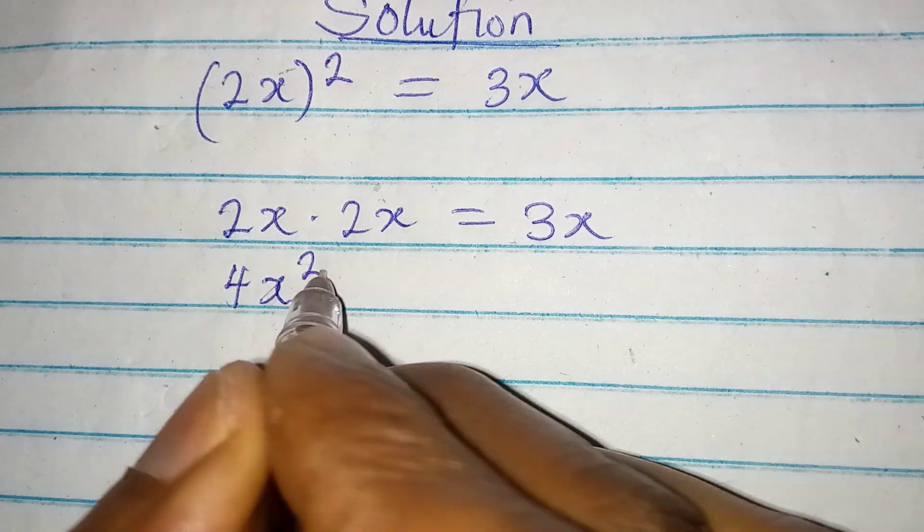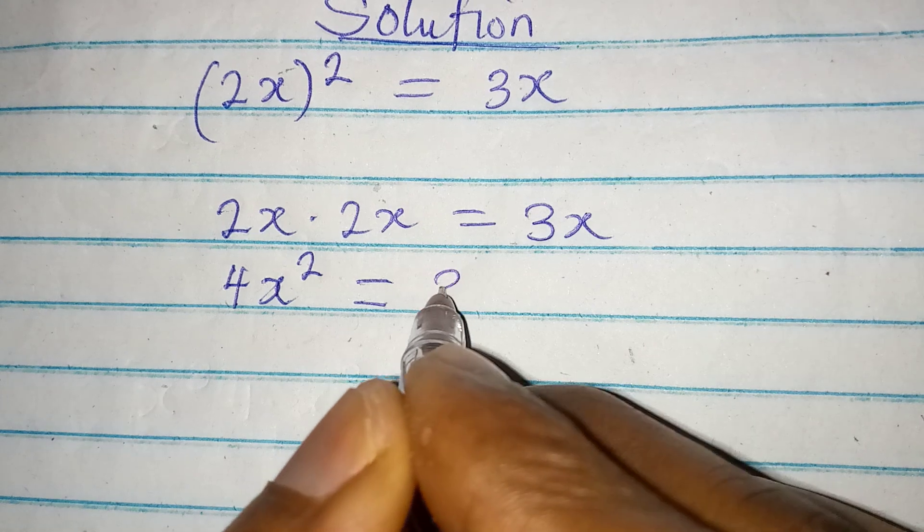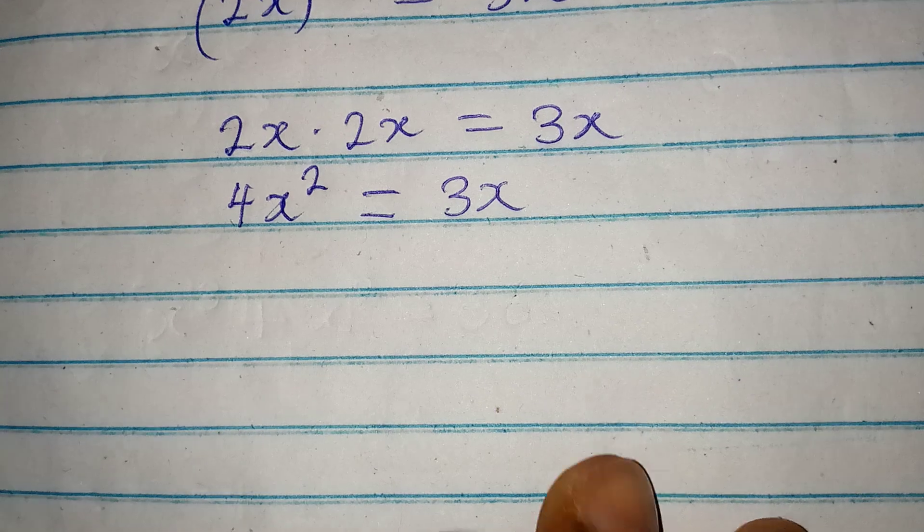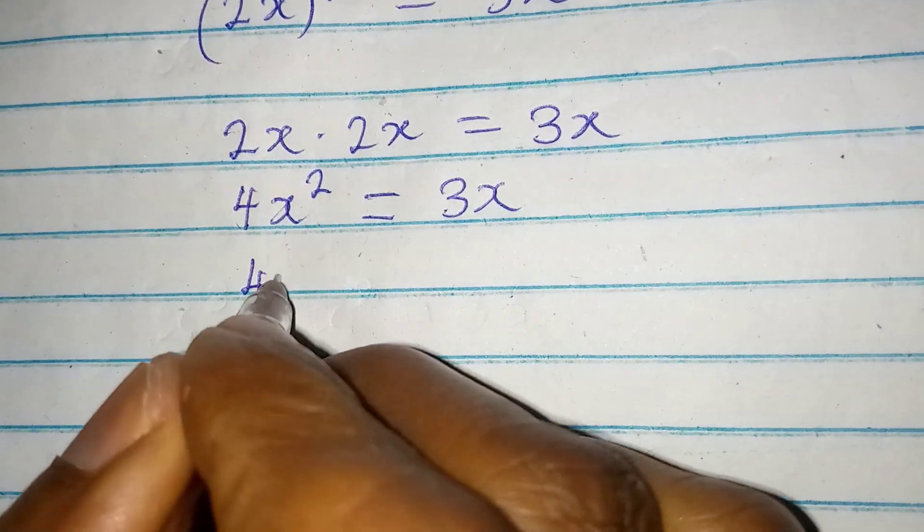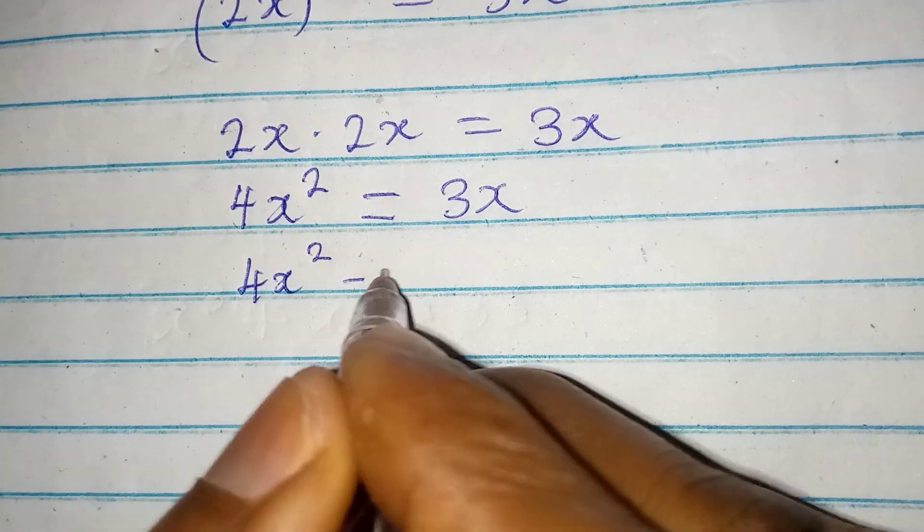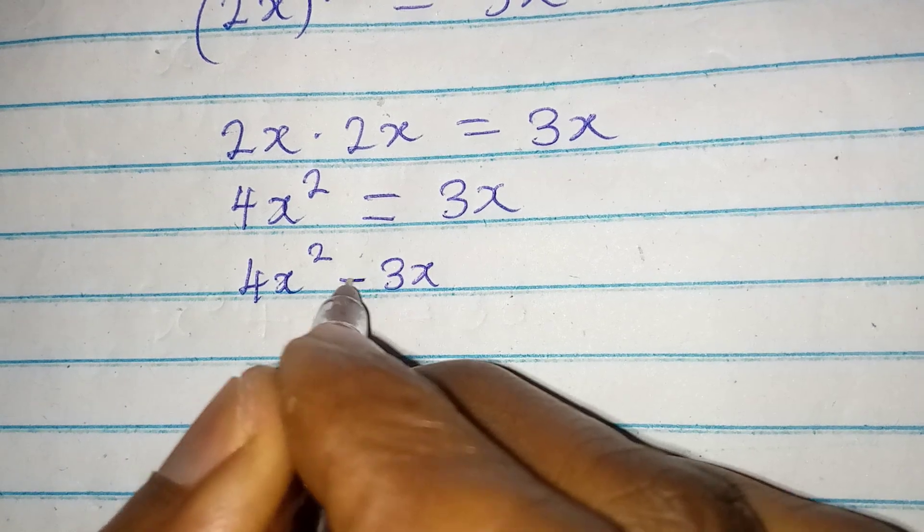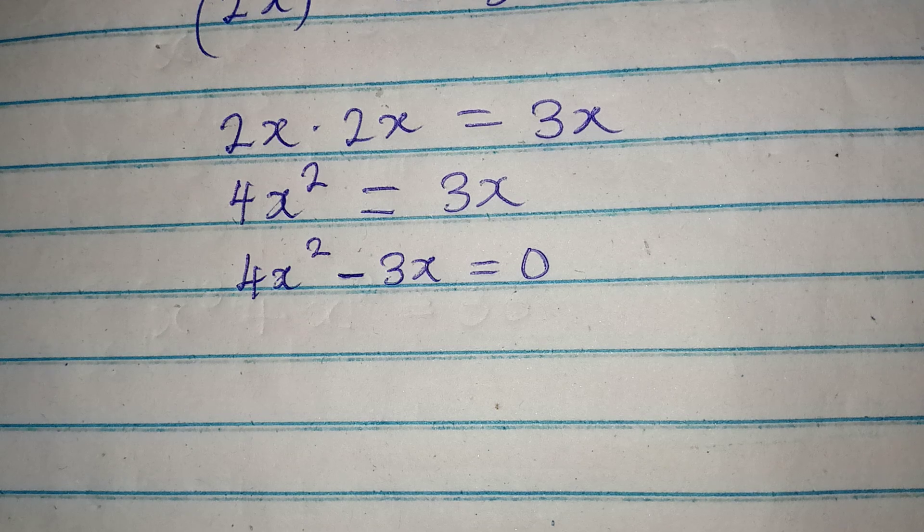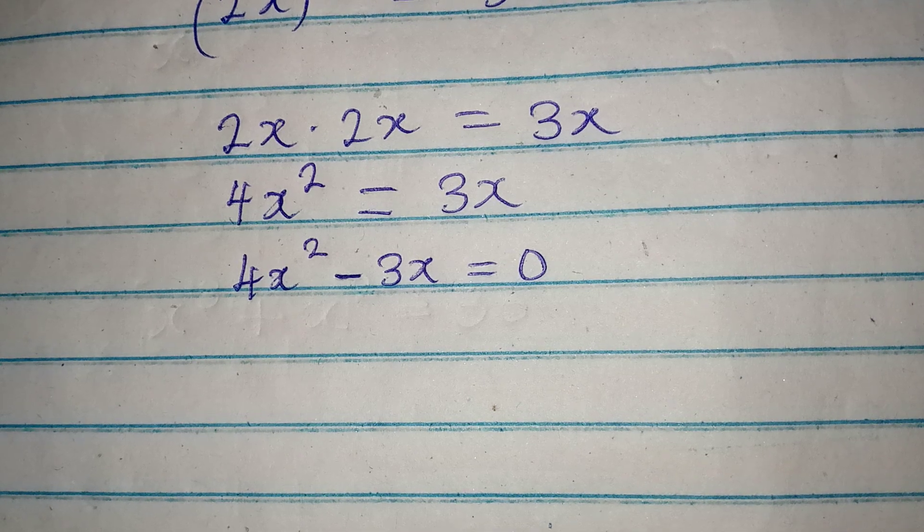Now bring everything to the same side so that 4x² - 3x is equal to 0. Now the next thing we are going to do is to factorize.